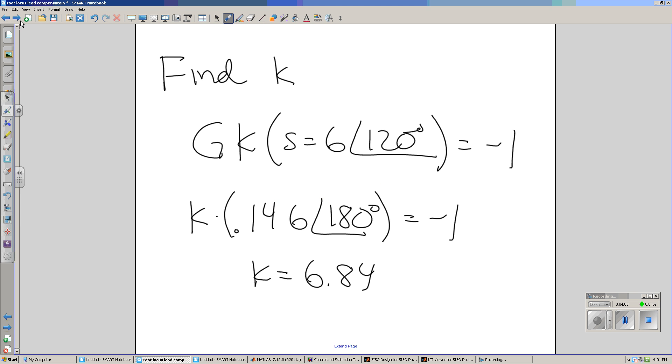Here it turns out the solution is at s equals 6 at 120 degrees. At that point on the root locus, g times k is minus 1, meaning you're on the root locus. Pick k so that the gain at that point is 1. So here k is 6.84.